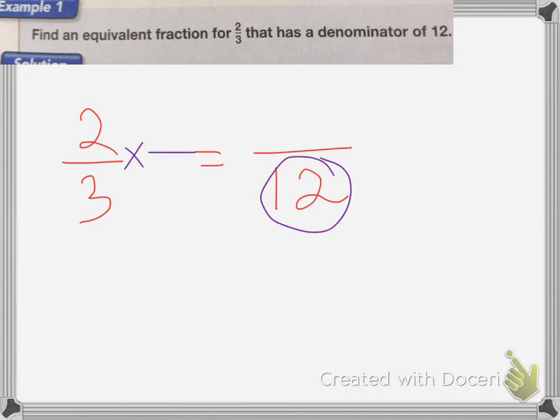I want to find an equivalent fraction for 2 thirds that has a denominator of 12. So I need to think, what fraction am I going to multiply this by to get the denominator of 12? So 3 times what equals 12? Well, 3 times 4 equals 12.